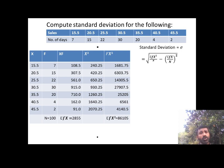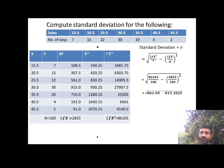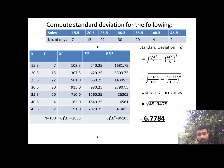Applying the alternative formula: sigma = square root of (86,861.05 / N) minus (sum of fx / N)². This simplifies to the square root of 86,861.05 minus 815.1025, giving the square root of 45.9475, and the standard deviation value is 6.7784. This is how we apply the alternative formula.